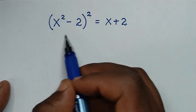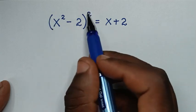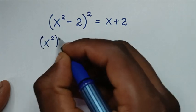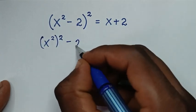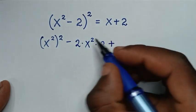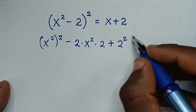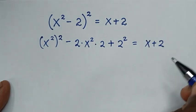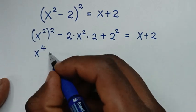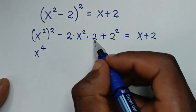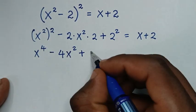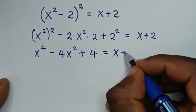In the first step, we expand the left side. So (x² - 2)² becomes x² squared, which is x⁴, then minus 2 times x² times 2, then plus 2² — is equal to x + 2. So x⁴ minus 4x² plus 4 is equal to x + 2.